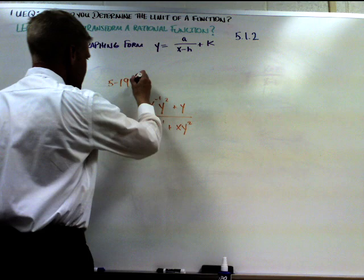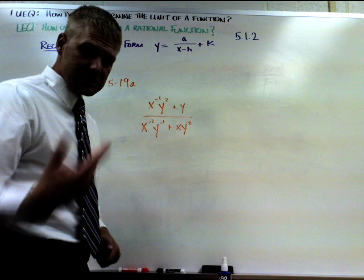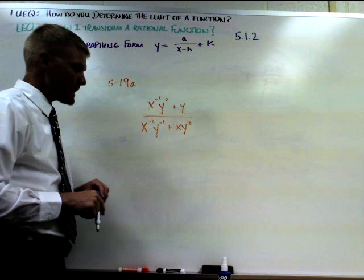All right, and we're back here on 19a. So what I need you to do there is take a look at that, and if you read the math notes box, you know that to get rid of a negative exponent we need to multiply by a positive exponent for that same variable.